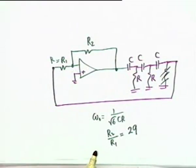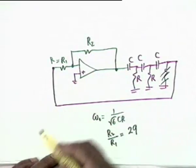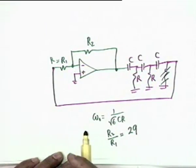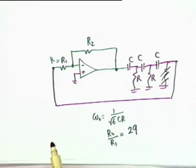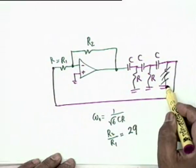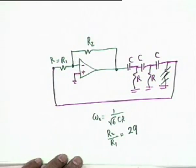With the op-amp, the virtual ground point means the last R connects directly to ground — a very simple and neat way of designing an RC phase shift oscillator. The op-amp is the best choice because this virtual ground property makes the design straightforward.